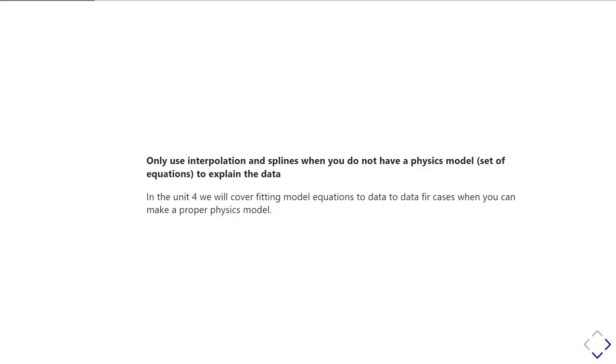The bottom line is you should only use interpolation and splines when you don't have a good physical model for the data. If you have a good physical model for the data, you should use curve fitting, which we'll talk about in unit four, in order to get an estimate of those intermediate values that actually makes use of the underlying physics of the situation you're trying to deal with. That's always better than using an interpolation or a spline.